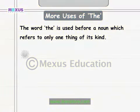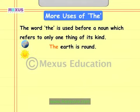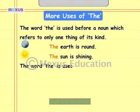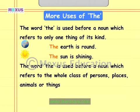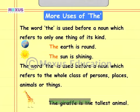Let's look at another sentence: ZeeZee packed the book that Fleck gave her. Here, 'the book' refers to the specific book that Fleck handed to ZeeZee. The word 'the' is used before a noun which refers to only one thing of its kind. There is only one sun and one earth, so we say 'the earth is round' and 'the sun is shining'. The word 'the' is also used before a noun which refers to the whole class of persons, places, animals or things — for example, 'the giraffe is the tallest animal', where 'the giraffe' refers to all giraffes.